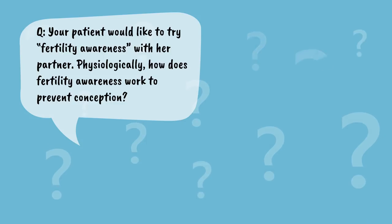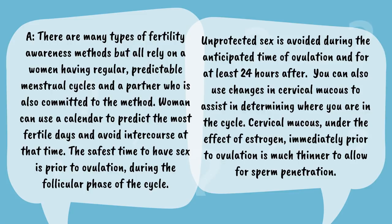Let's pause, think, and apply. Your patient would like to try fertility awareness with her partner — physiologically, how does this work? Fertility awareness methods rely on a woman having regular, predictable menstrual cycles and a committed partner. Women can use a calendar to predict the most fertile days and avoid intercourse at that time — unprotected sex is avoided about 5 days before ovulation, the day of ovulation, and for at least 24 hours after. Changes in cervical mucus can also assist: under the effect of estrogen immediately prior to ovulation, cervical mucus is much thinner to allow for sperm penetration.